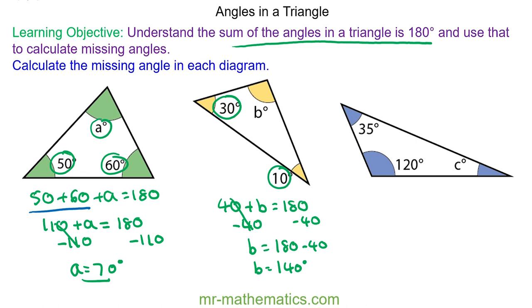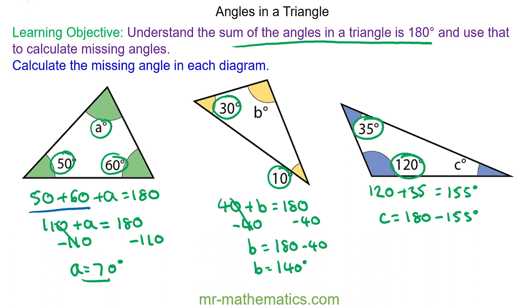For question C, again we can add the two known angles together. So 120 add 35 is 155 degrees. So angle C will be 180 take away 155 degrees, so angle C will be equal to 25 degrees.